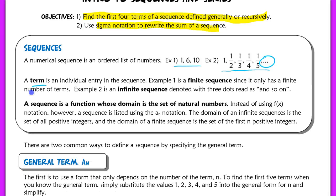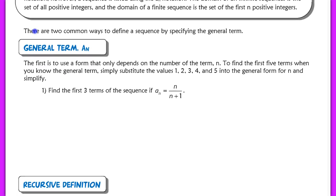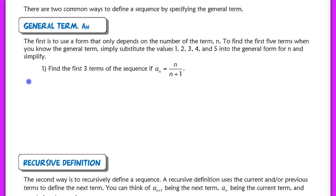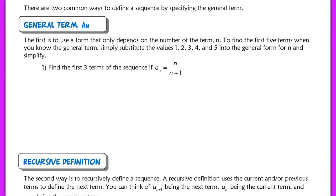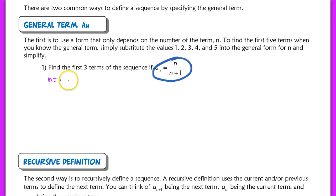There are two common ways to define a sequence by specifying the general term. The first is to use a form that only depends on the term number n. To find the first five terms when you know the general term, you simply substitute values 1, 2, 3, 4, and 5 into the general form for n and then simplify.